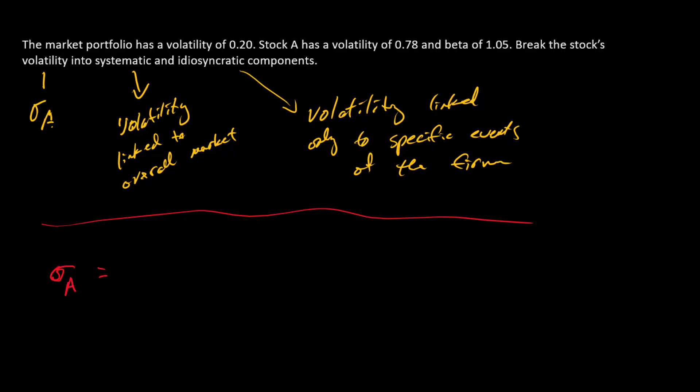The stock's total volatility, or sigma A, is going to be its beta times the market volatility plus what we're going to call the idiosyncratic volatility of the stock. And so here I'll just call this idiosyncratic vol. And so since this is a decomposition, we're going to calculate this amount, and then we're going to use this as the plug, or whatever is left over.